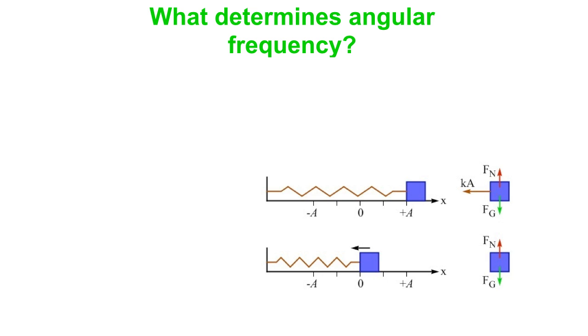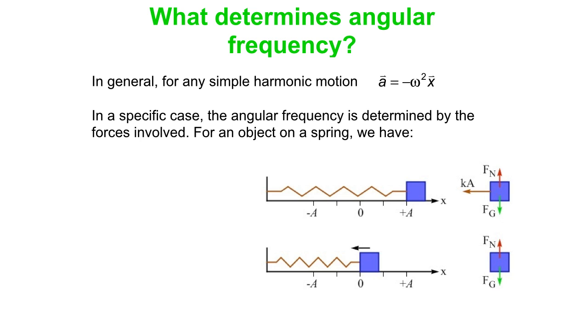Now in those equations omega was all over the place, so what is it that determines angular frequency? We'll look at the block on the spring. In general, what we see is the acceleration is opposite in direction to the displacement, proportional to it, and the proportionality constant is ω². For any specific case we can analyze the forces. We can do sum of the forces equals ma, and the only force that really matters here is the horizontal force applied by the spring.